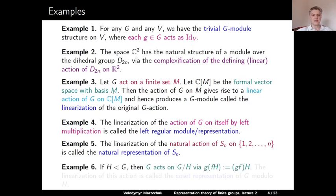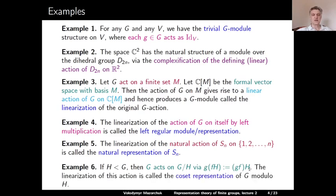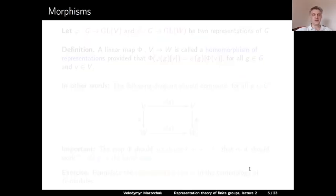Example 5: if H is a subgroup of G, then G acts on the set G/H of cosets of G modulo H as follows. We take an element g and apply it to the coset fH, producing the coset gf·H. The linearization of this action is called the coset representation of G modulo H.